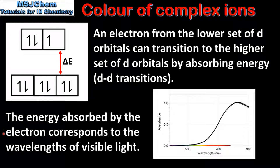The energy absorbed by the electron corresponds to the wavelengths of visible light. Looking at the absorption spectrum for the hexa aqua copper 2 ion, when white light passes through the solution, certain wavelengths of light are absorbed and certain wavelengths are transmitted. The energy absorbed when the electron transitions from the lower set to the higher set of d orbitals corresponds to the wavelengths of light that are absorbed, and the remaining wavelengths are transmitted, which we see as blue. In summary, d to d electron transitions absorb energy corresponding to the wavelengths of visible light.